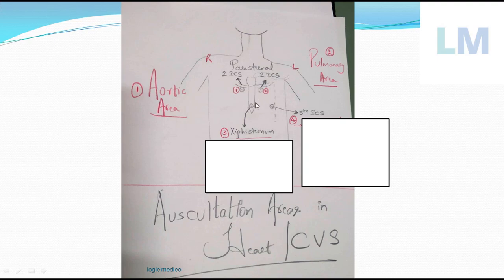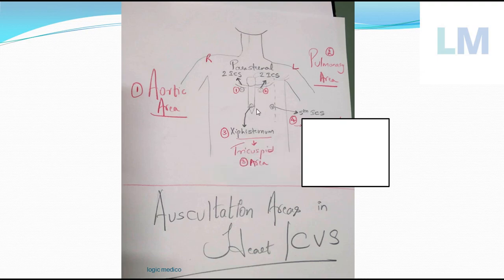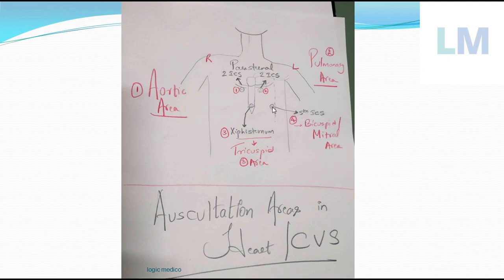Similarly, the closure of the AV valve produces S1 - 'lub'. The tricuspid valve closure is heard at the xiphisternal junction, called the tricuspid area. Any problem in the lub sound there means a problem in the tricuspid valve. In the mid-clavicular line in the fifth intercostal space - the bicuspid or mitral area - the closure of the bicuspid valve produces the lub sound clearly. Any problem in the lub sound here indicates a problem in the bicuspid valve.